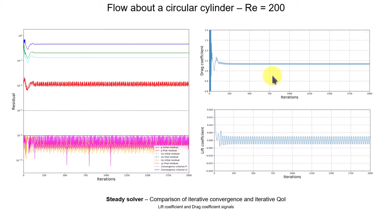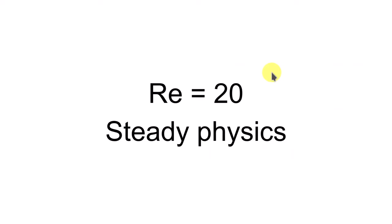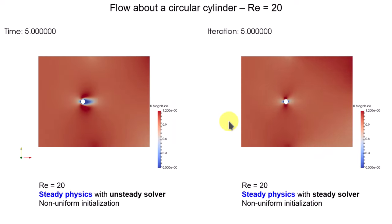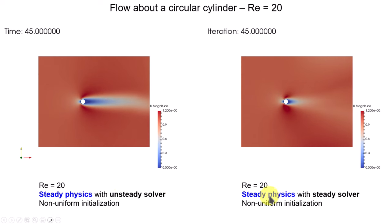Let's move now to what happens when you have actual steady physics. This is what we want, but in real applications, you don't find this very often. Sometimes you can make the approximation — we can talk about a quasi-steady solution, or a mid-steady, or a mildly unsteady flow. So this is what happens here: steady physics with a steady solver. Here, low Reynolds number, and you will see that both solvers are going to converge.